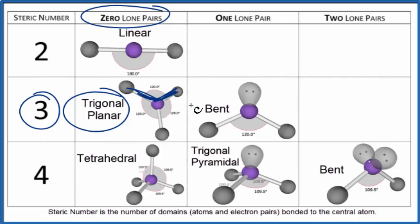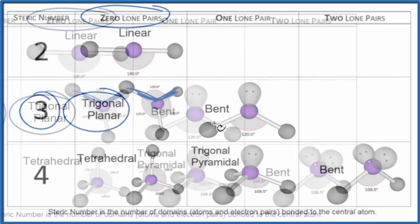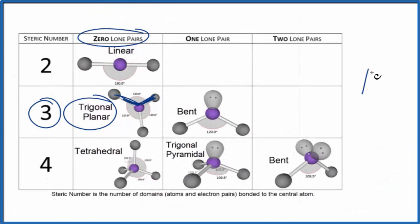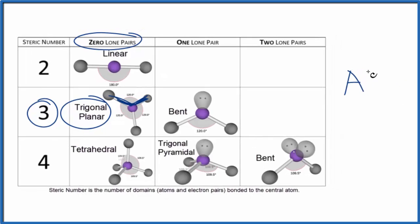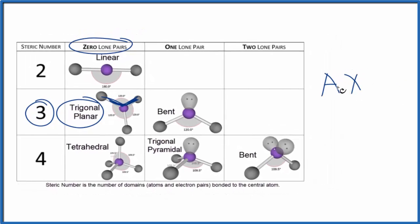You could also use the AXE notation if you've been asked to do that. So A, that's the central atom. That's the boron. X, those are the atoms attached to it. We had those three chlorine atoms, and there are no lone pairs. So sometimes you'll see the E written as zero. So if we look up AX₃, that will give us this trigonal planar molecular geometry. Since there aren't any lone pairs, the electron geometry is also trigonal planar.